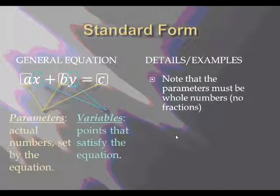Note that the parameters must be whole numbers, so not fractions. 1, 2, and 3, 4, 5, 6—nice counting numbers. Here are some examples: 2x minus 3y is 14. That works. They're whole numbers. Negative 19x plus 13y equals 0. 0 is okay, and so is negative 19. These are excellent examples of equations in standard form.